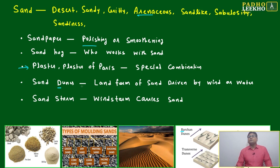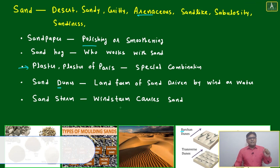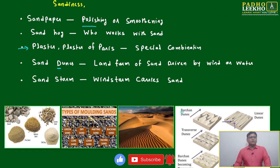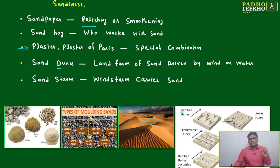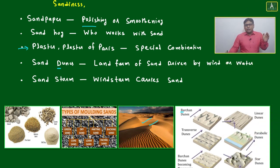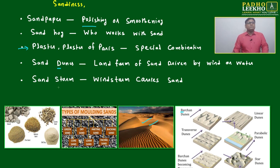Sand dunes are landforms of sand driven by wind or water — like in Arab countries. Different types of sand dunes form based on wind direction and location, whether near a sea area or a windy area. We'll discuss these different types of sand dunes in a little more detail. A sandstorm is a wind storm that carries sand.